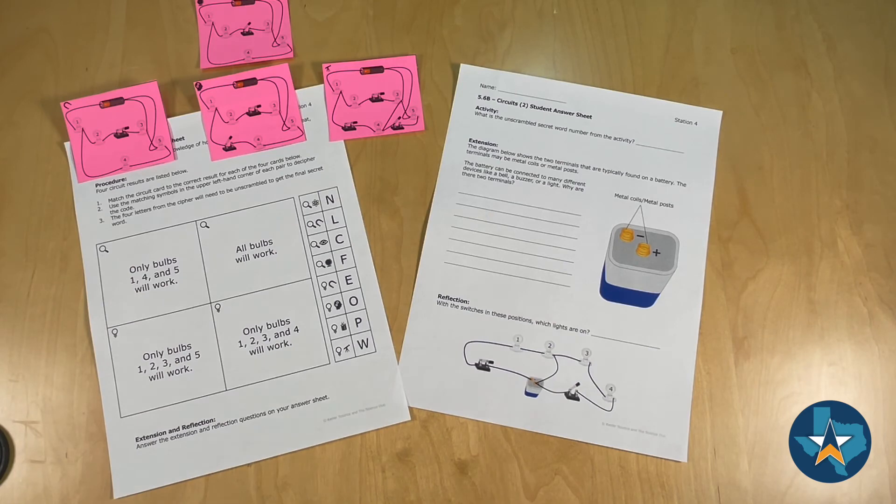And then lastly on the reflection portion students will look at a circuit and have to determine which lights or light or lights would light up given the position of the wires and the switches.